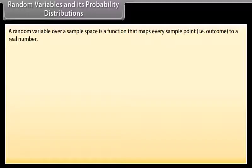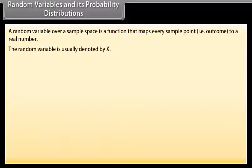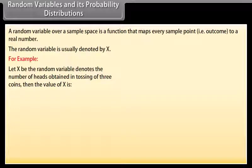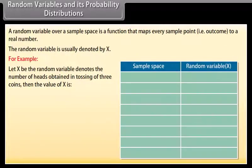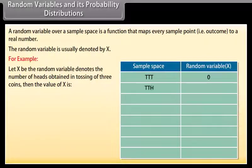Random Variables and Probability Distributions: A random variable over a sample space is a function that maps every sample point (outcome) to a real number, usually denoted by X. For example, let X denote the number of heads when tossing 3 coins. For sample space TTT, X = 0; for TTH, X = 1; for THT, X = 1.